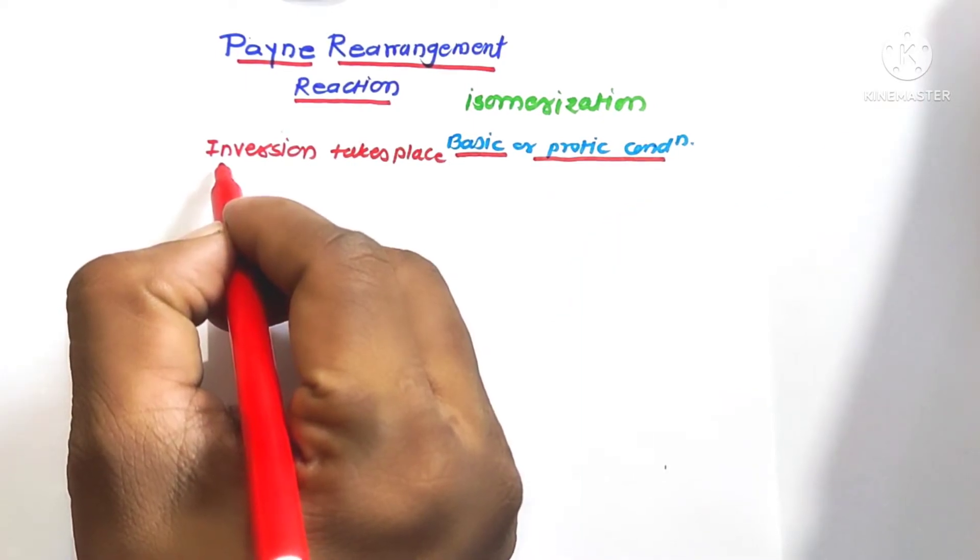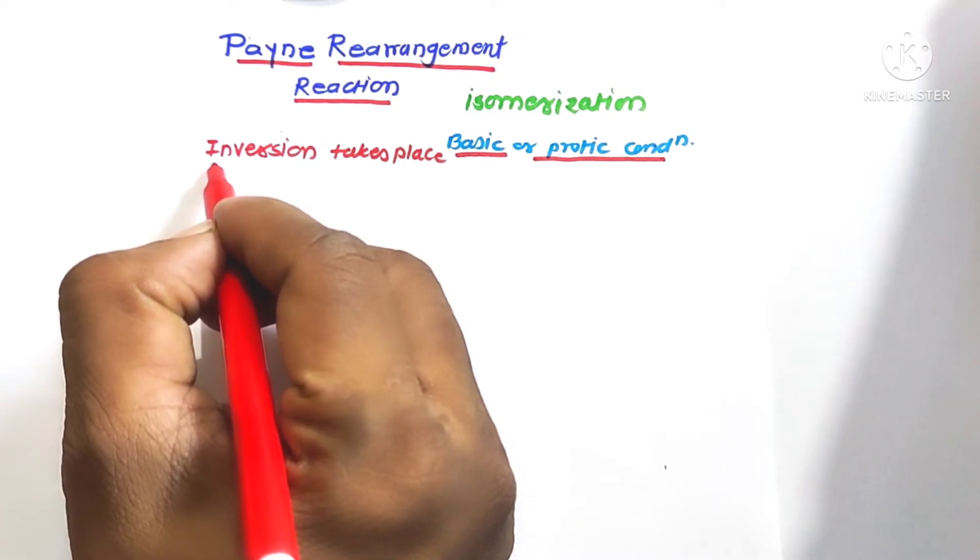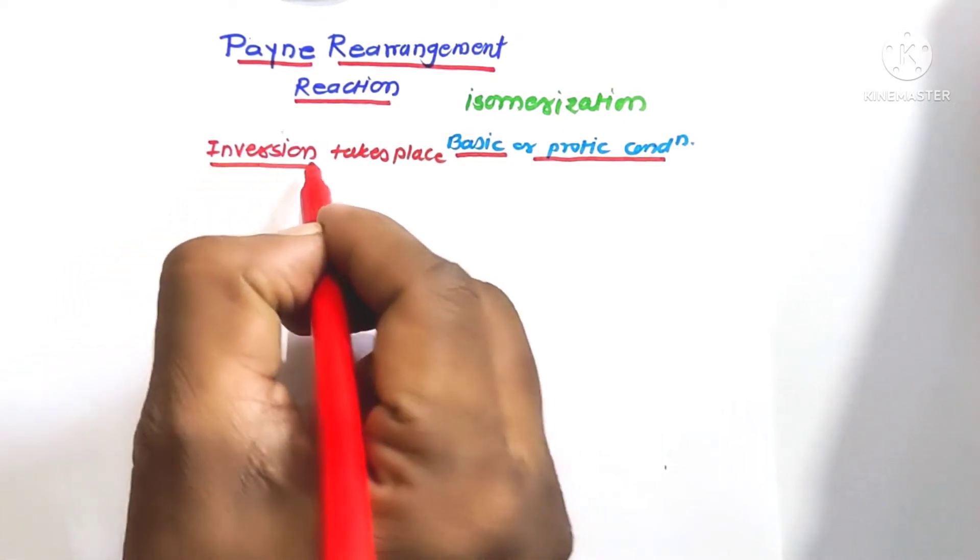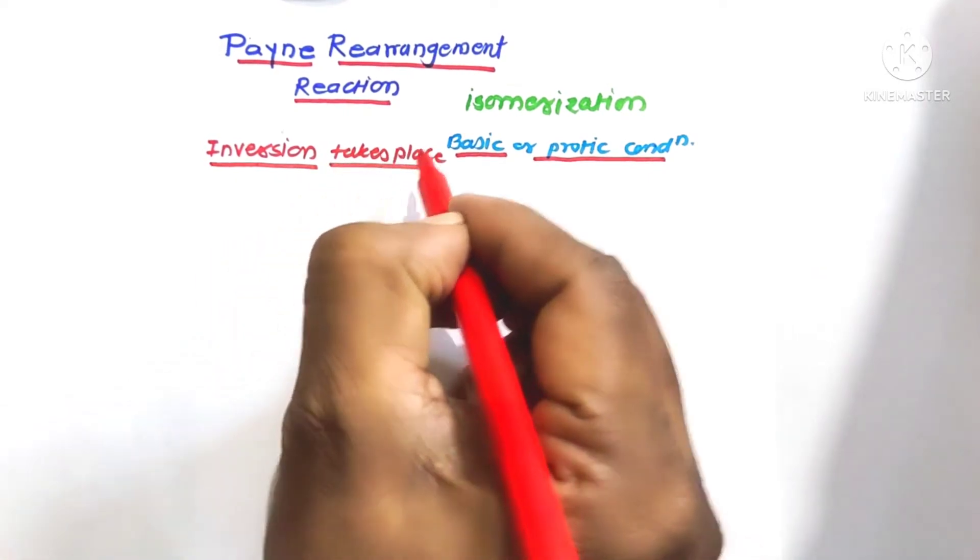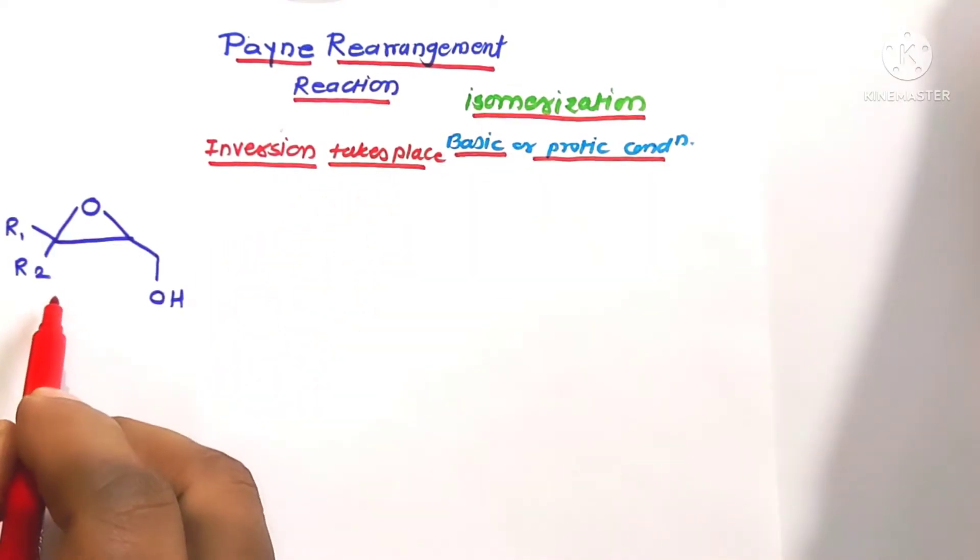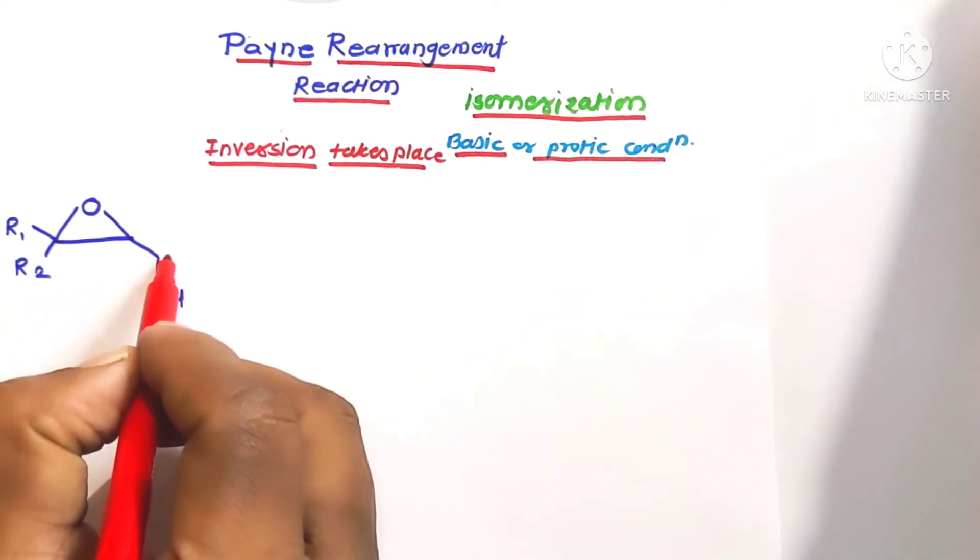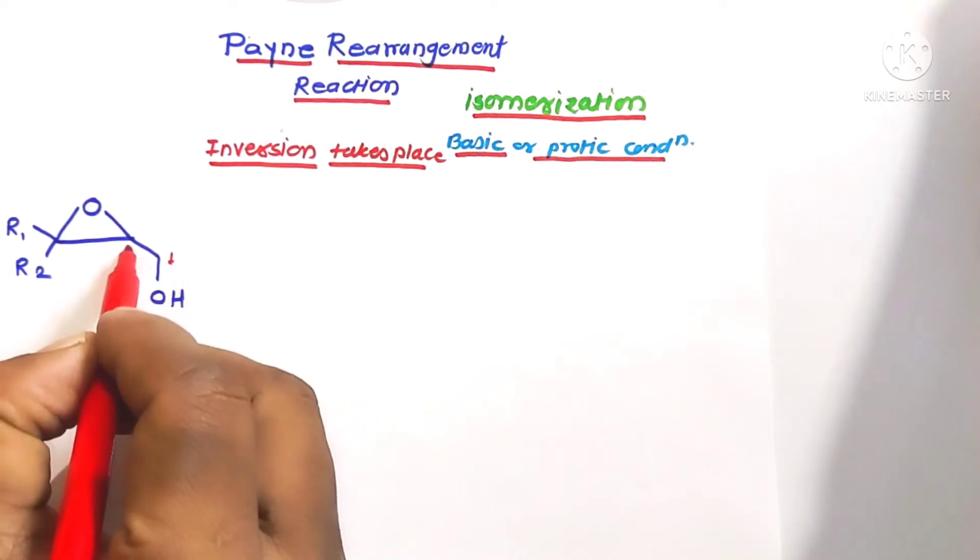Pinacol rearrangement reaction gives stereochemical product, and the stereochemistry of the product gives inversion of product molecules. The main substrate of this Pinacol rearrangement reaction is 2,3-epoxide alcohol. Here, these are the first carbon, second, and third carbon.